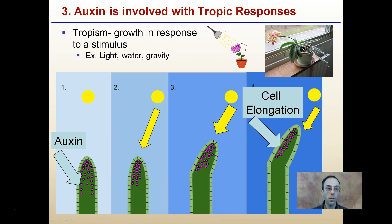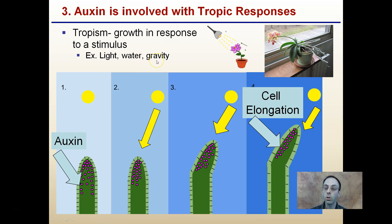Auxin is involved with tropic responses. Tropism refers to growth in response to a stimulus. There's light in the sense of sunlight, water — where water might be located and roots want to go towards that — and gravity, which is how roots know to go down and shoots know to come up. We see here the light response with two plants bending towards the light.